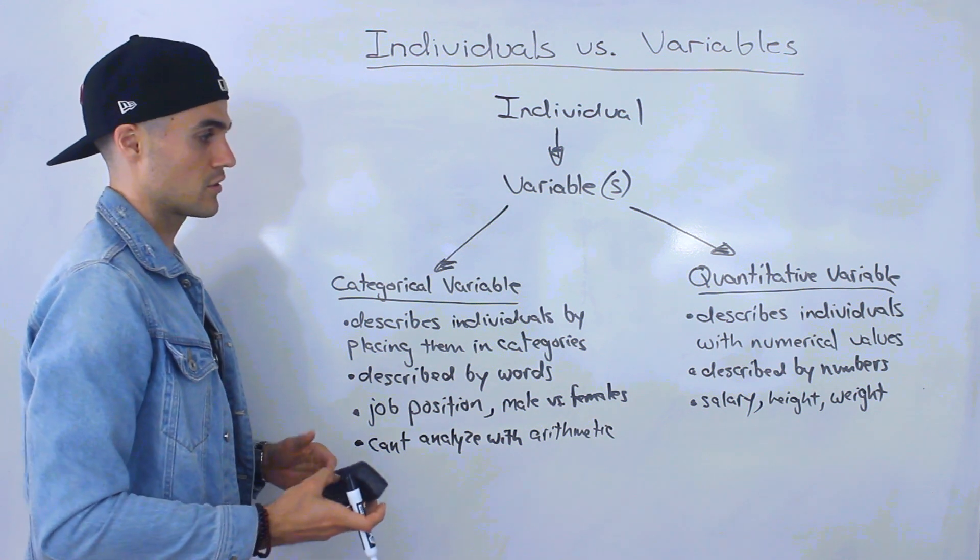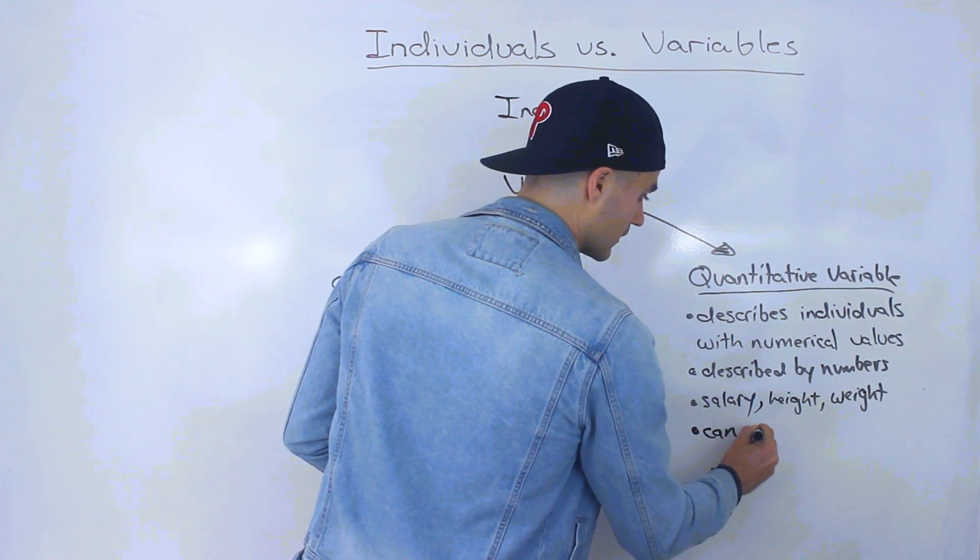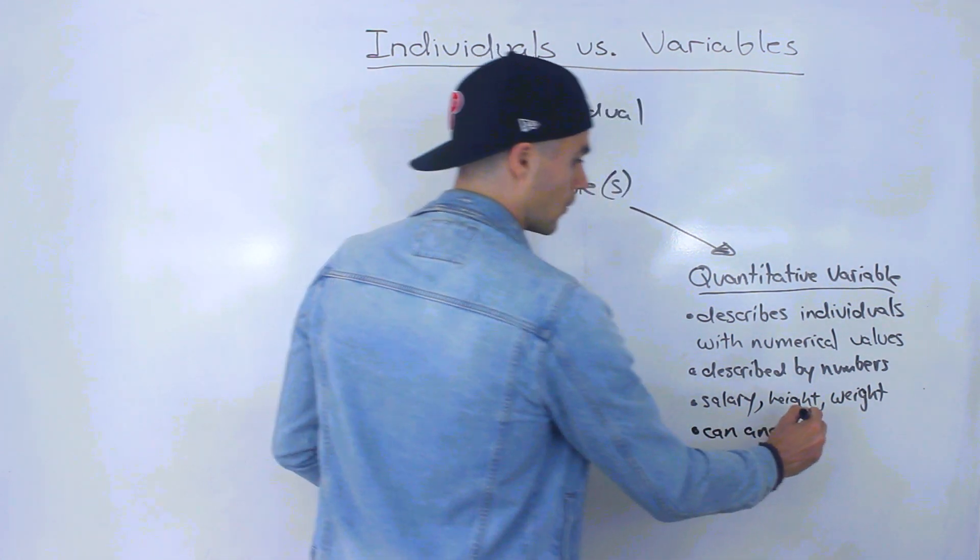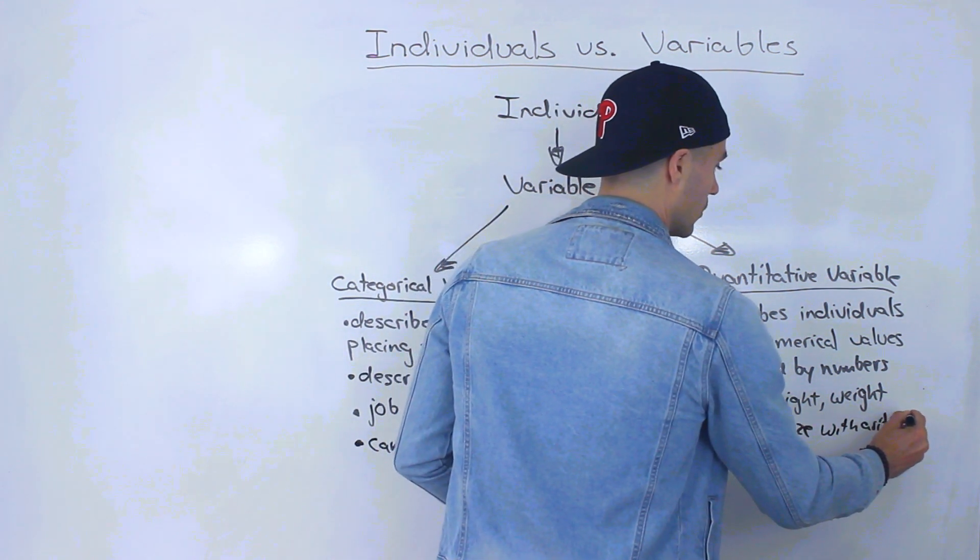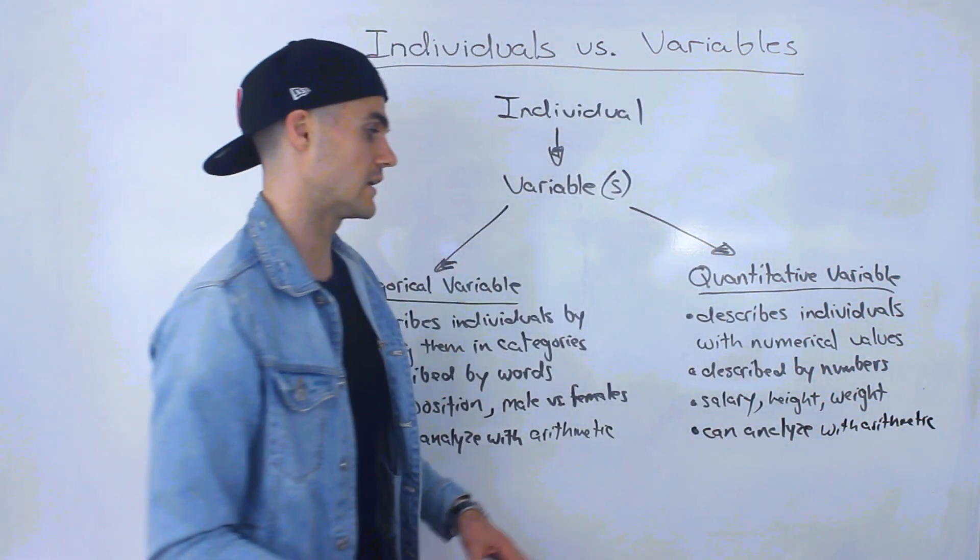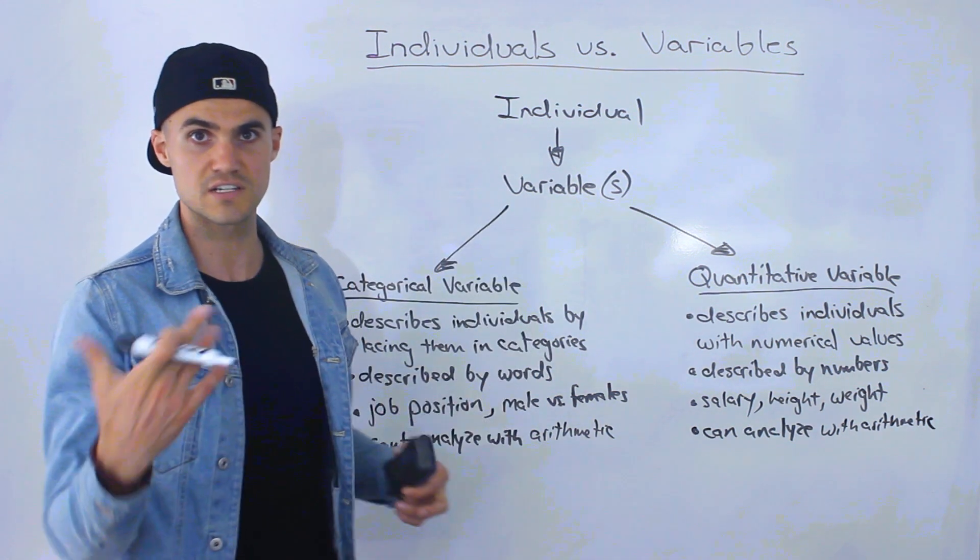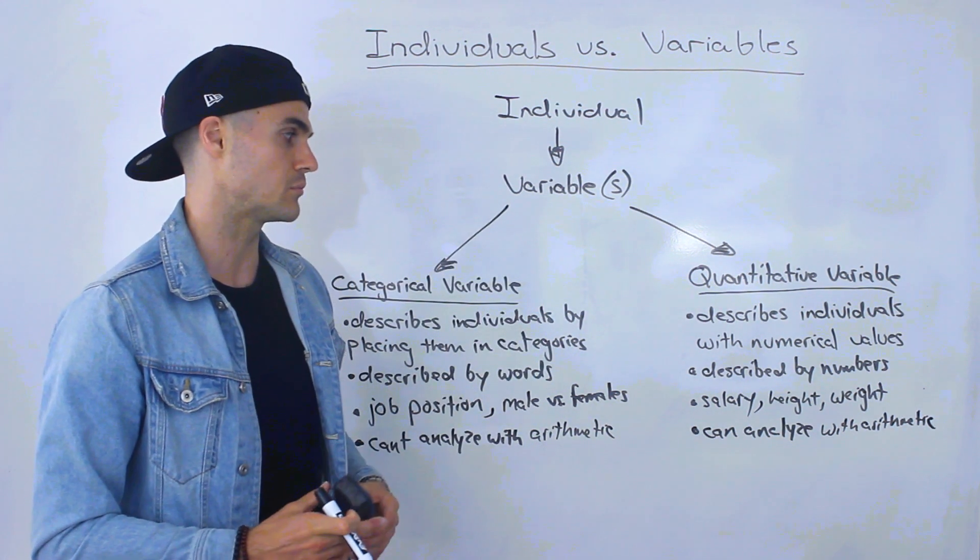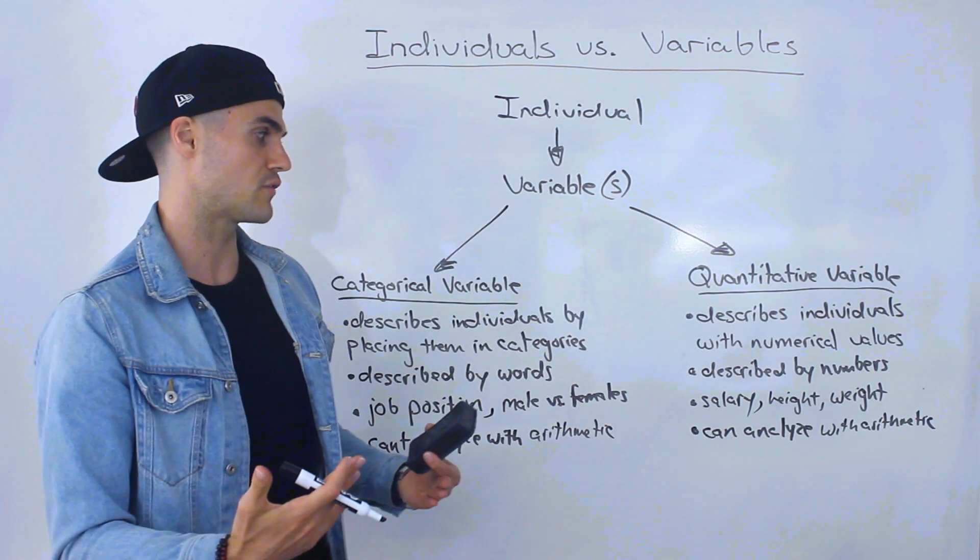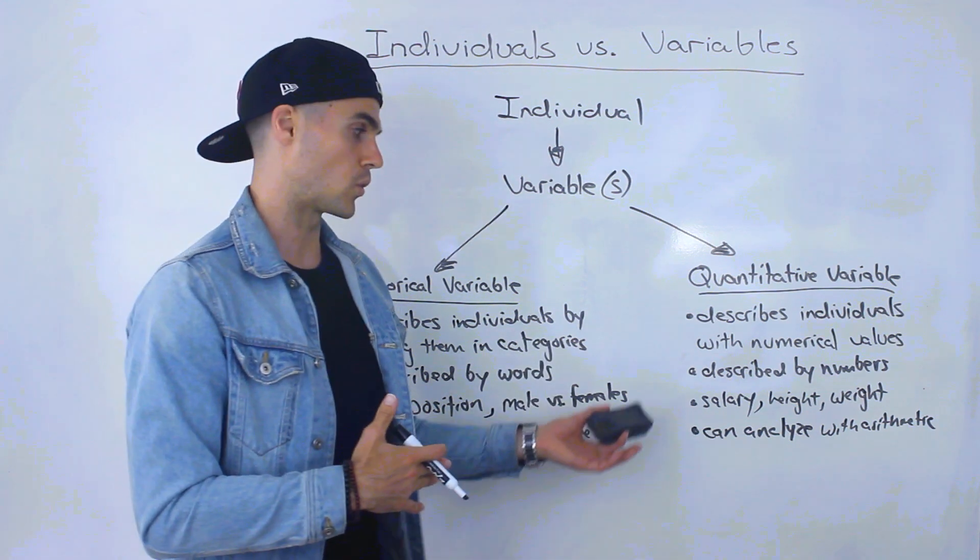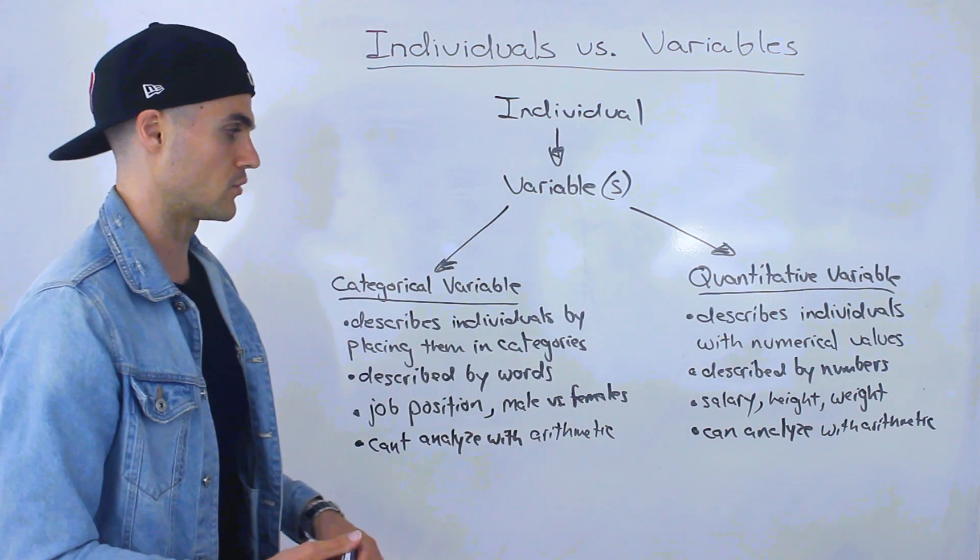So you can't analyze with arithmetic. Versus here with quantitative variables, you can analyze with arithmetic. So for example, let's say we wanted to find out what was the average salary in that company. We could just add up all the salaries, divide it by the number of employees. We can find out the variability of the salary, which is something we're going to be analyzing, maybe finding the standard deviation or the quartiles. So you can analyze quantitative variables with arithmetic.